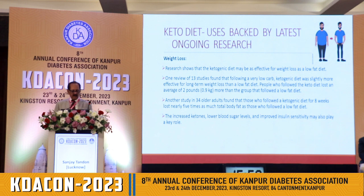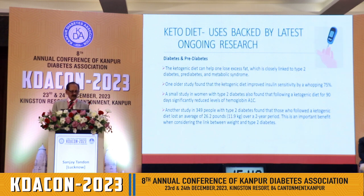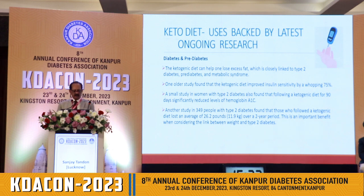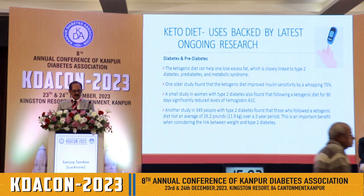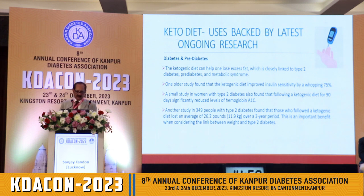Another study in 34 older adults found that those who followed a ketogenic diet for 8 weeks lost nearly 5 times as much total body fat as those on a low fat diet. Increased ketone levels, lower blood sugar levels, and improved insulin sensitivity may play a great role. In diabetes and prediabetes, the ketogenic diet may help one lose excess fat, closely linked to type 2 diabetes and metabolic syndrome. One study found that ketogenic diet improves insulin sensitivity by 75%. A small study in women with type 2 diabetes found that following a ketogenic diet for 90 days led to a significant reduction in HbA1c of 0.9 to 1.2. Another study in 349 people with type 2 diabetes found those on a ketogenic diet lost an average of 11.9 kg over 2 years.